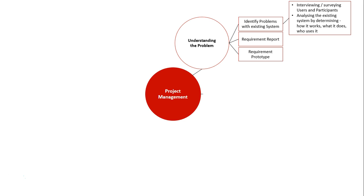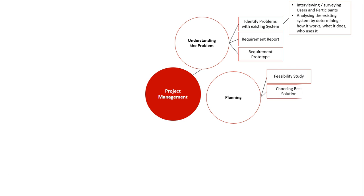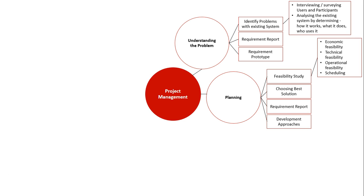The next stage is the planning stage, where we look at the development of the actual new system. Should we go ahead and create a new system? One of the first stages here is the feasibility study, which looks at four areas: economic (money), technical (hardware and software), operational (whether participants can use the system), and scheduling (the time frame). All of this factors into whether or not it is feasible to create a new system.